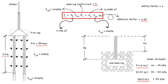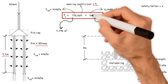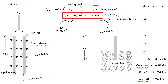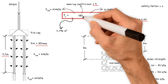Therefore, the ultimate pile capacity equals the base bearing capacity — area of base 0.096 × undrained shear strength at base 200 kN/m² × bearing coefficient 9 — giving a value of 173.2 kN. Plus the skin friction capacity — surface area of shaft 6.0484 × shear strength of clay of shaft 40 kN/m² × adhesion factor 0.45 — giving a value of 108.9 kN. The total ultimate pile capacity is 173.2 + 108.9 = 282.1 kN.